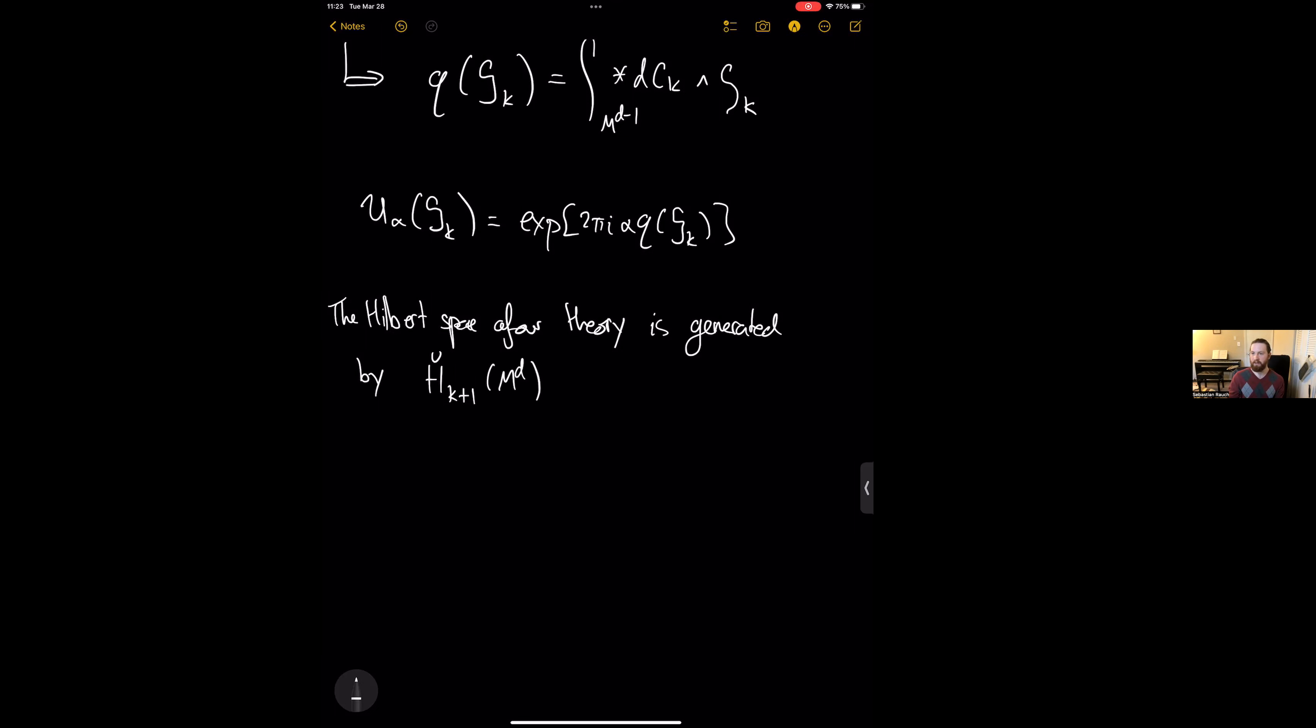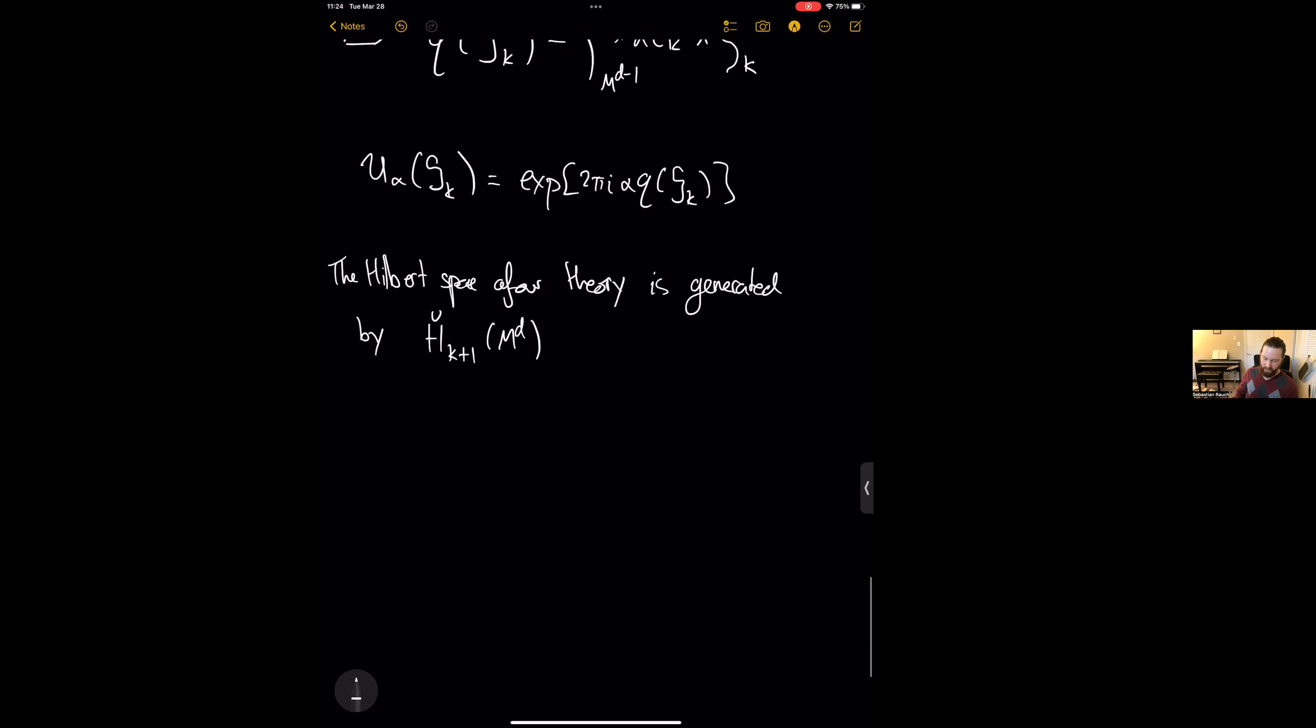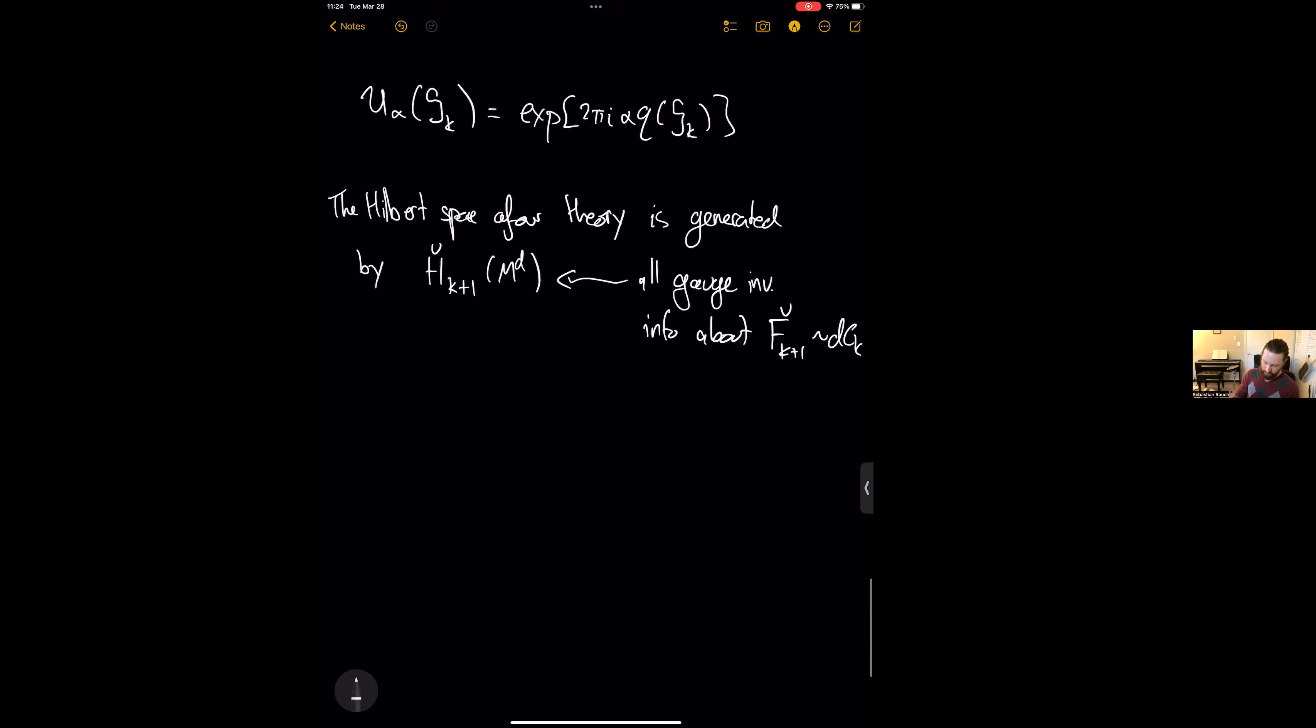So this is classifying the both the curvature of a connection and the discrete holonomies that it can carry. So this is all gauge invariant info about FK plus one, which is some generalization of DCK. So this means I can write states like this. This is my basis.